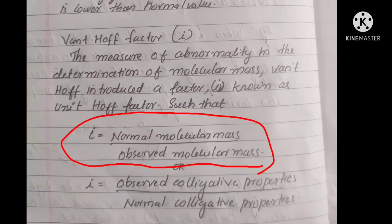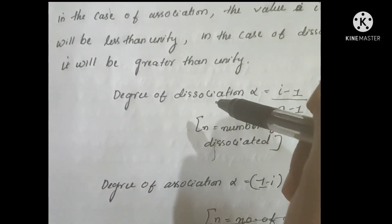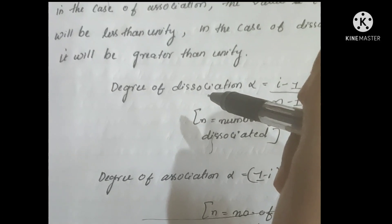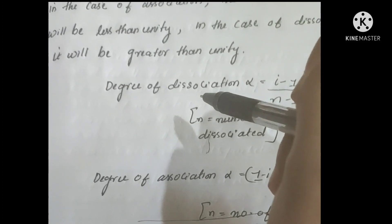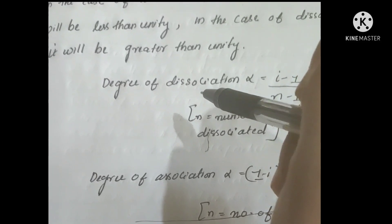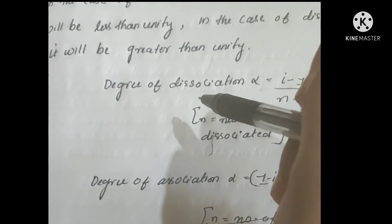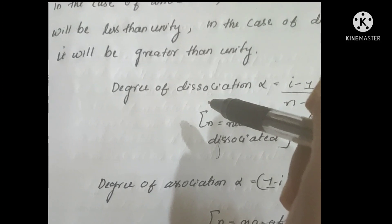Since any colligative property of the solution is inversely proportional to the molar mass of the solute, the Van't Hoff factor then may be defined as the ratio of the normal molar mass of the solute to its value determined experimentally from a colligative property measured. When a solute undergoes no change in its molar mass, such as association or dissociation in solution, then i equals 1. Otherwise, i will not be equal to 1.